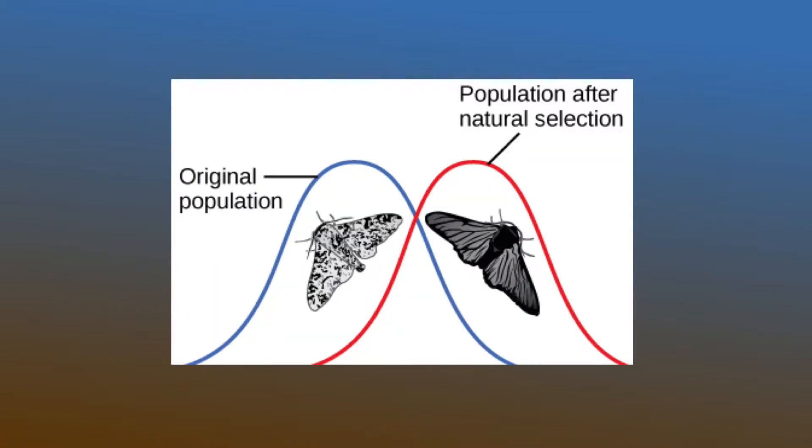So as you can see in this diagram, the black peppered moth will have greater fitness and will be found in greater frequencies than the white peppered moth.